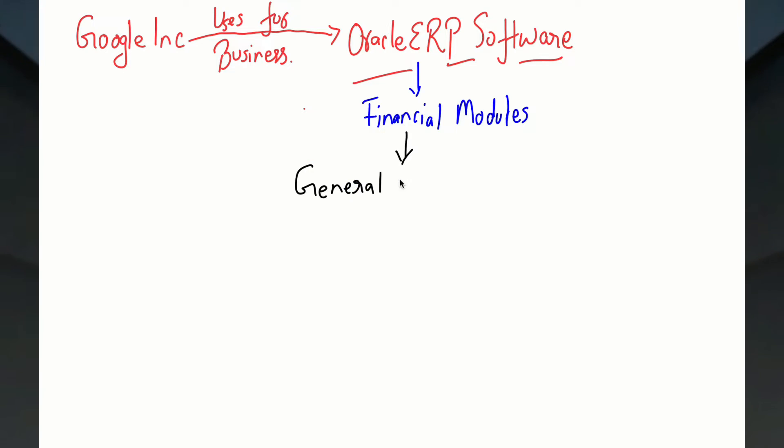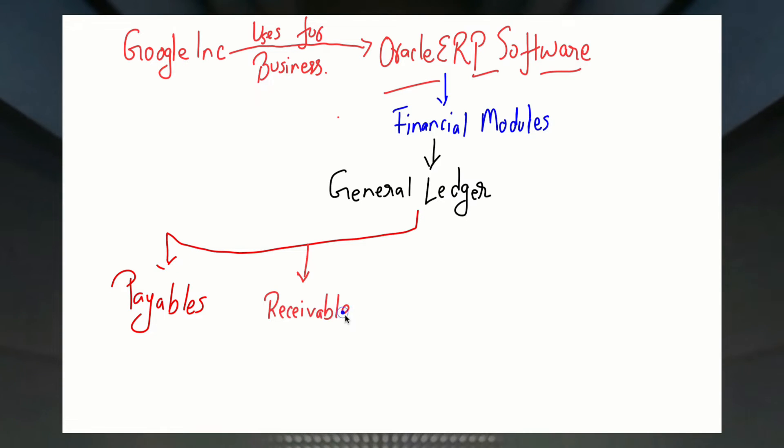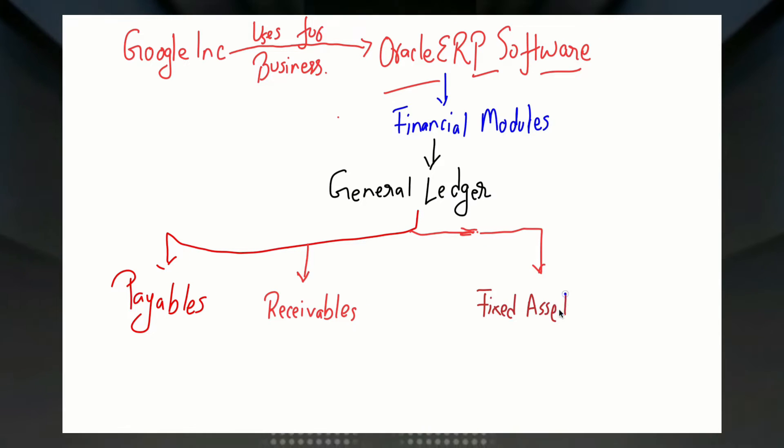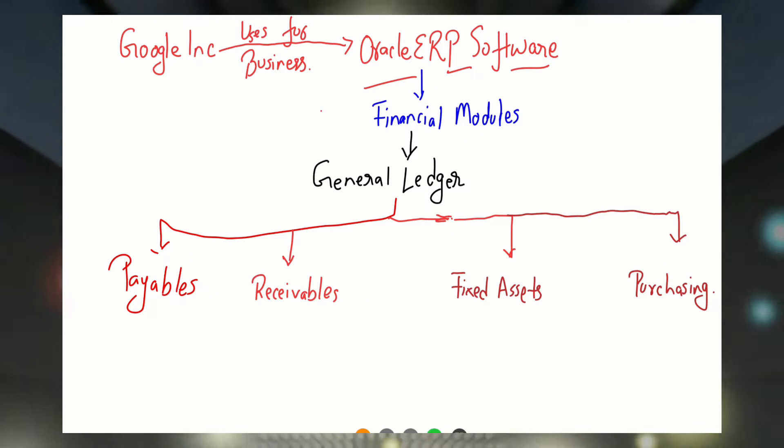So Google Inc uses this Oracle ERP software and they have financial modules in it. The financial modules are: journal ledger, payables, receivables, fixed assets, and purchasing. Though purchasing is not technically a part of finance, I have included it so that we can cover the procure-to-pay cycle.